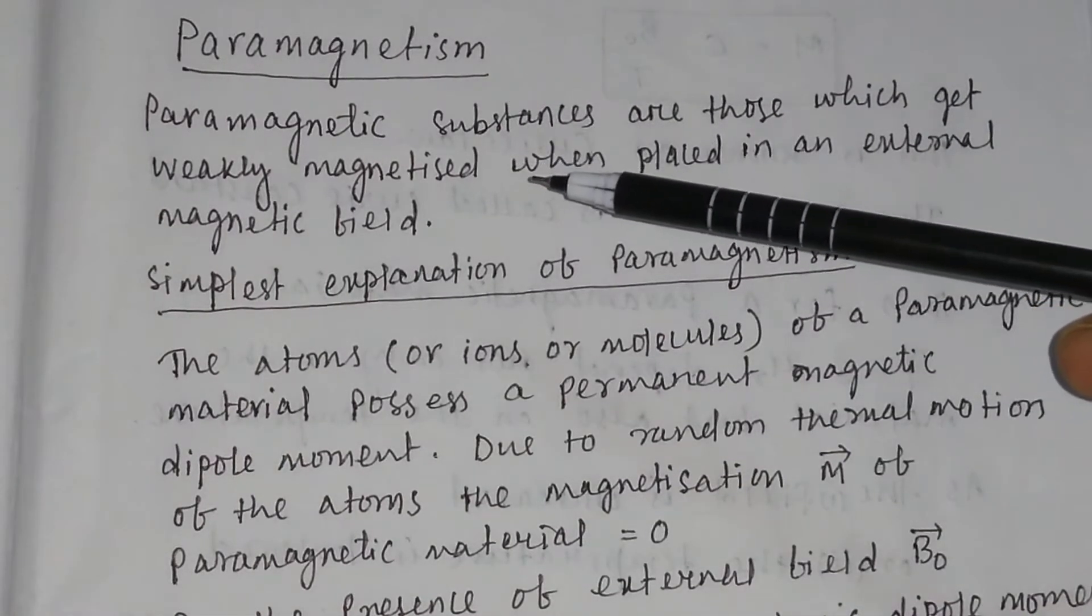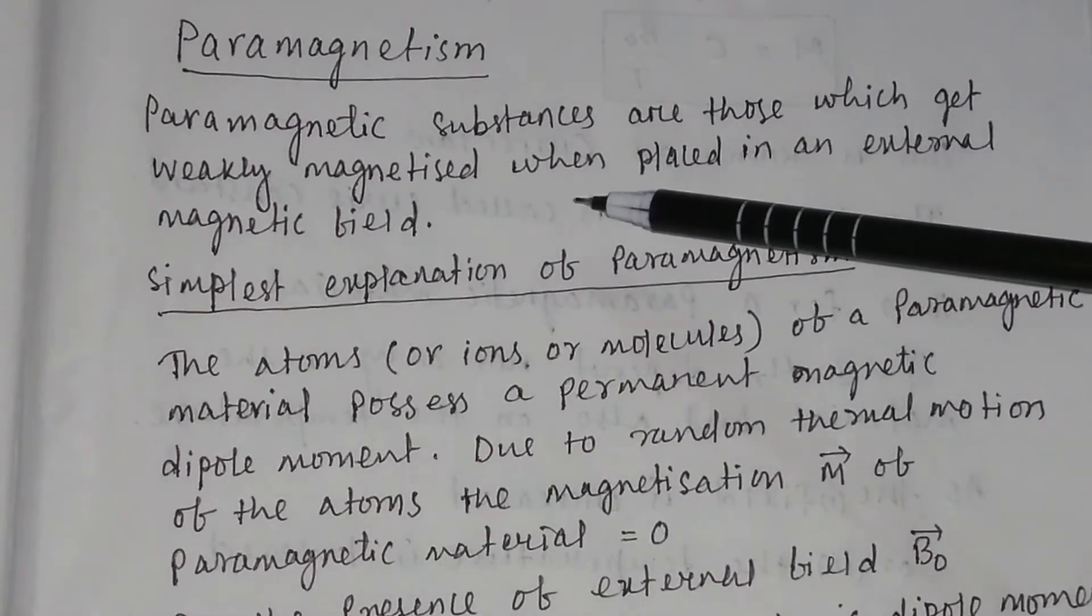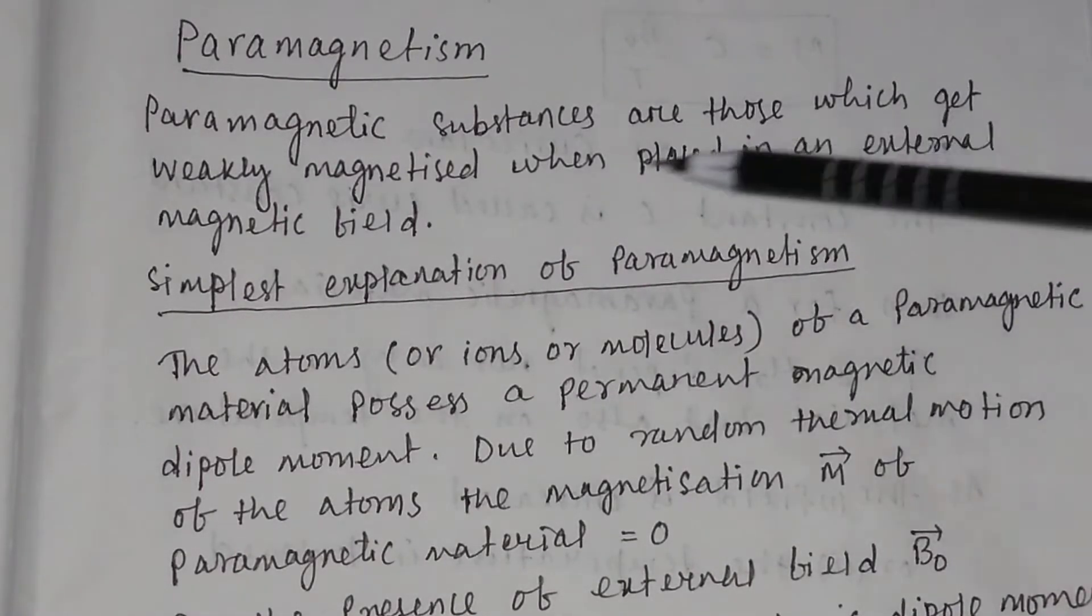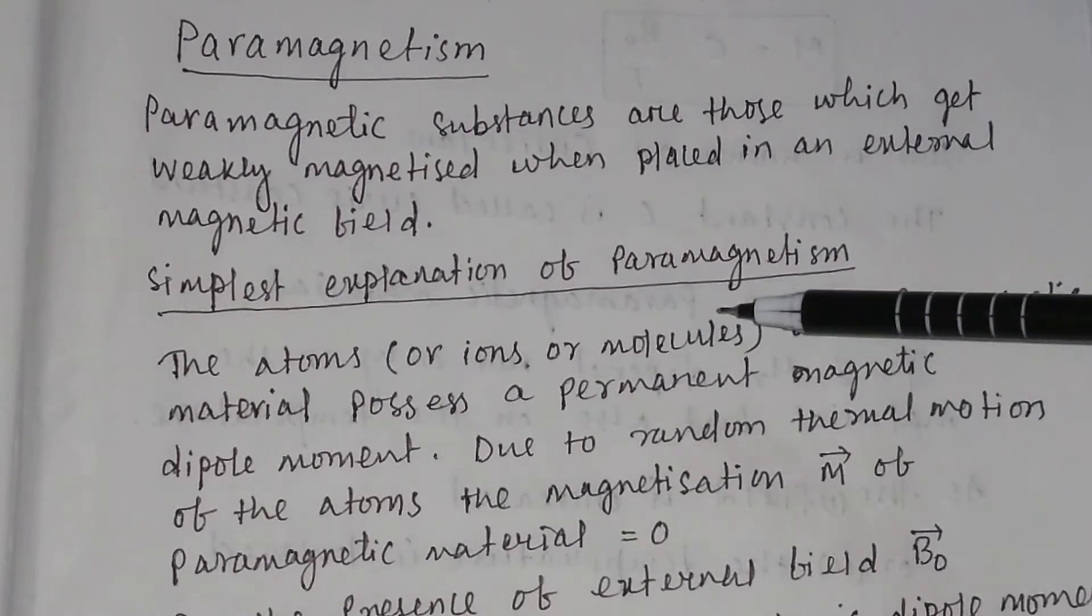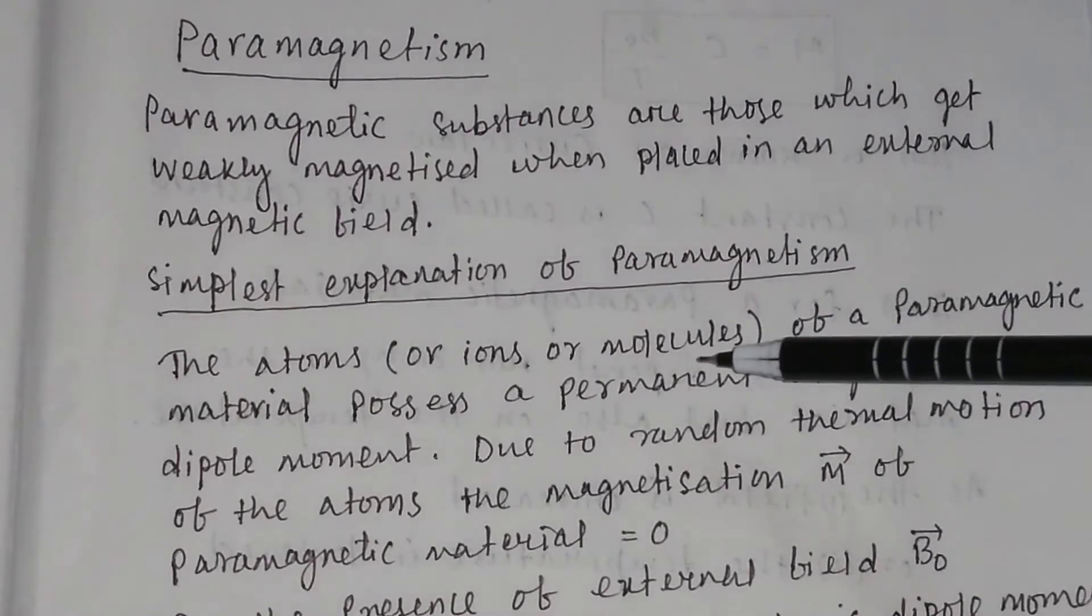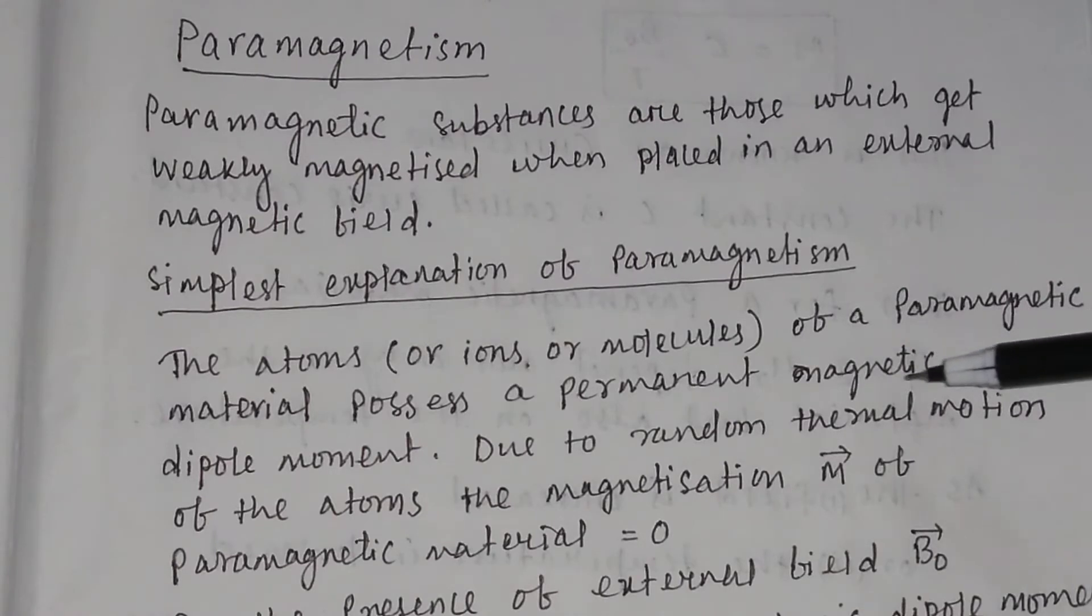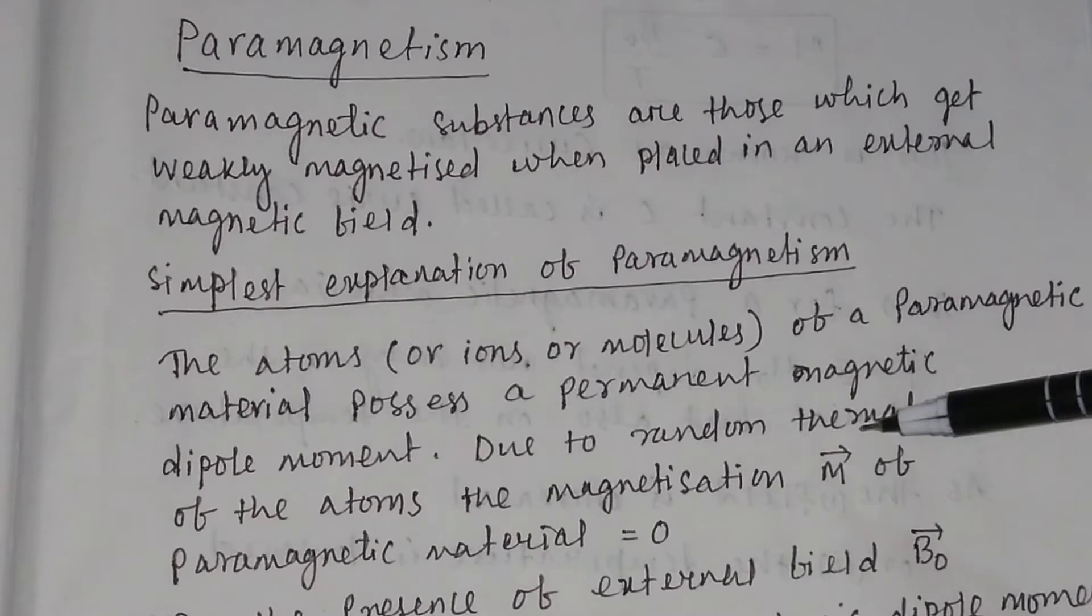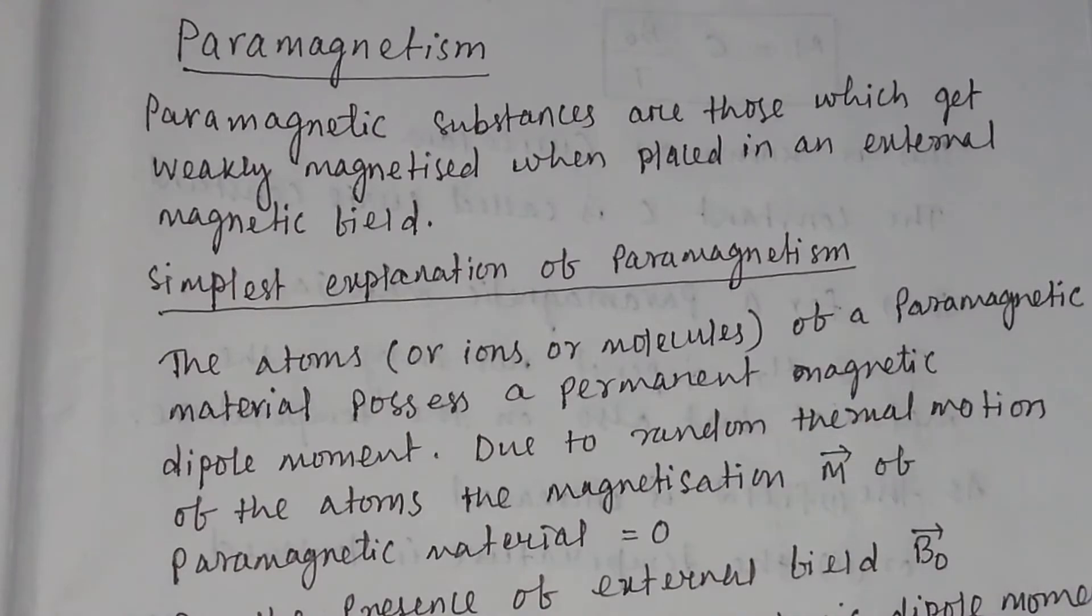Paramagnetism. Paramagnetic substances are those which get weakly magnetized when placed in an external magnetic field. The simplest explanation of paramagnetism is that the atoms, ions, or molecules of a paramagnetic material possess a permanent magnetic dipole moment. Due to random thermal motion of the atoms, the magnetization M of the paramagnetic material is equal to zero.